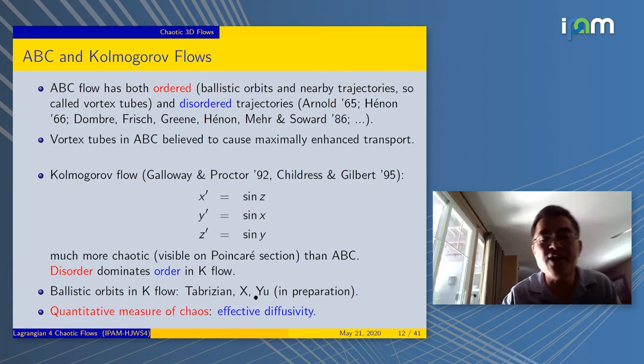It's messy. It's clear that disorder dominates order in the Kolmogorov flow. In the ABC flow, the disorder part is weak. But in the Kolmogorov flow, the disorder part is very, very strong. In ongoing work with my colleagues, we're trying to construct the ballistic orbit in Kolmogorov flow.